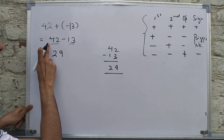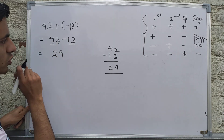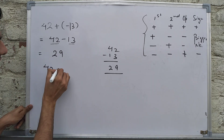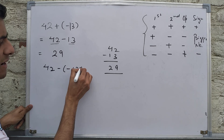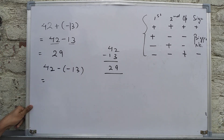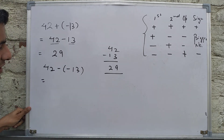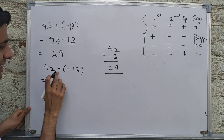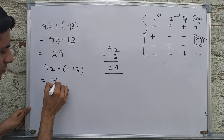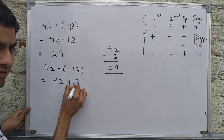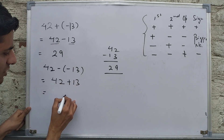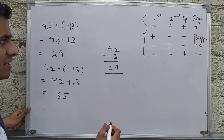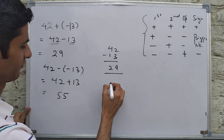Now let's take another example: 42 - (-13). When we open the brackets, negative times negative becomes positive, so it becomes 42 + 13, which is obviously 55.